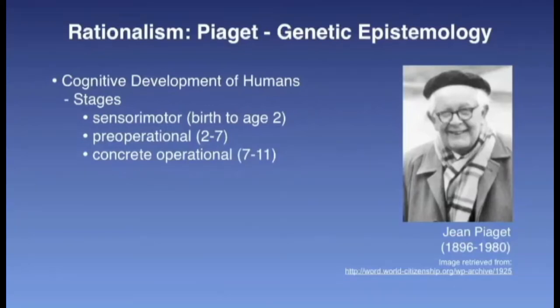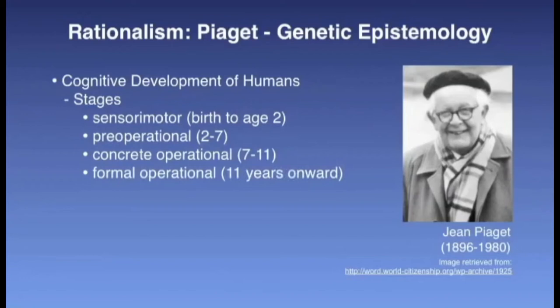And finally, formal operational, 11 years onwards. Individuals begin to think abstractly, they reason logically, and are able to draw conclusions based on the information that is available. One of the primary challenges to this theory focuses on instances where individuals do not proceed from one stage to the next across all areas of knowledge, such as mathematics, language, physics, or art. In some instances, individuals may never reach the formal operational stage in one or more areas, and in even more rare instances, individuals who are adults in chronological age may never reach the formal operational level in any area.